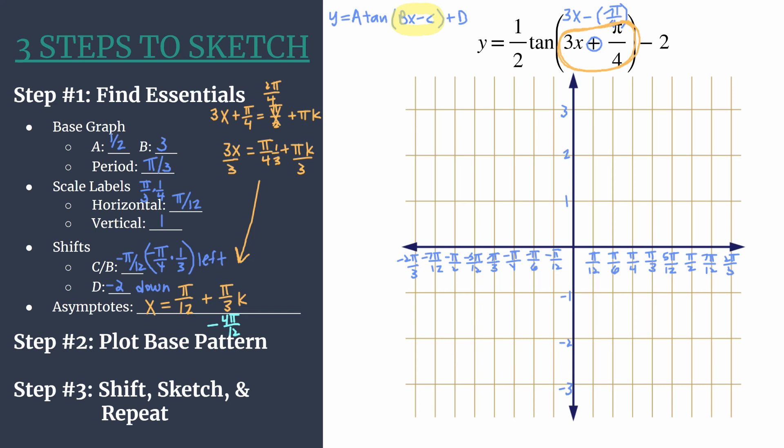The tough part's done. We've done all the analysis. We've organized all our facts, all our information. We're ready to move on to step 2, where we will lightly plot the base pattern. This is going to be our unshifted graph. So either mark lightly with your pencil or use a different color. I'll use a light blue for this graph.